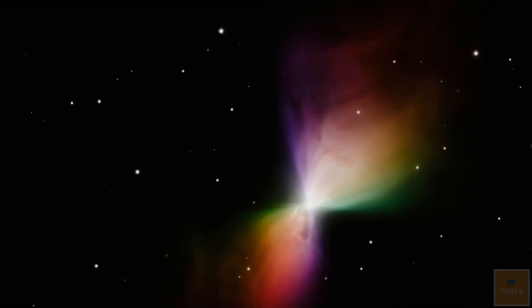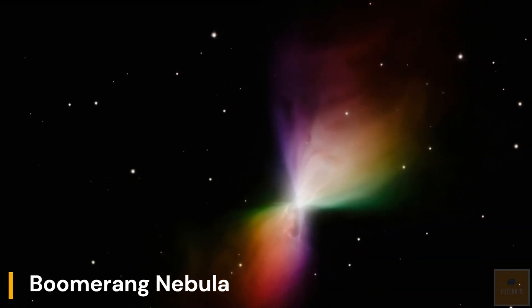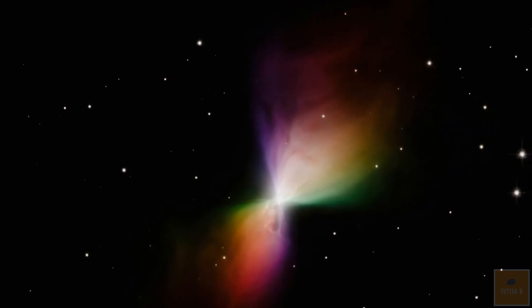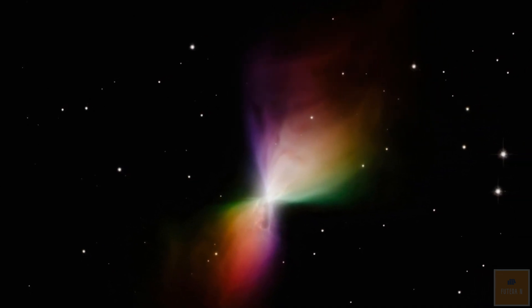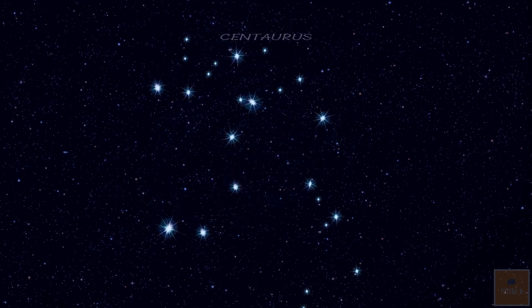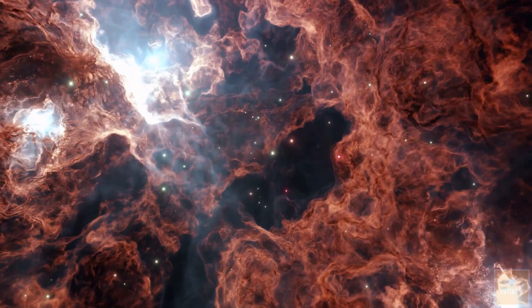The Boomerang Nebula is the coldest known place in the universe, with a temperature of 1 Kelvin or minus 272.15 degrees Celsius or 457.87 degrees Fahrenheit. It is located in the Centaurus constellation, and is classified as a protoplanetary nebula.